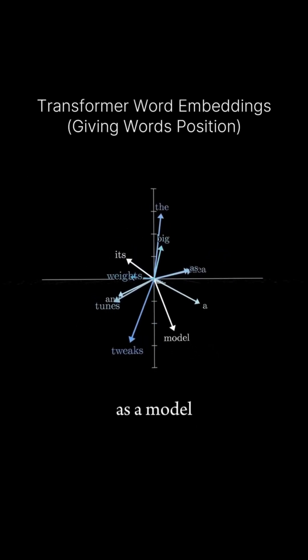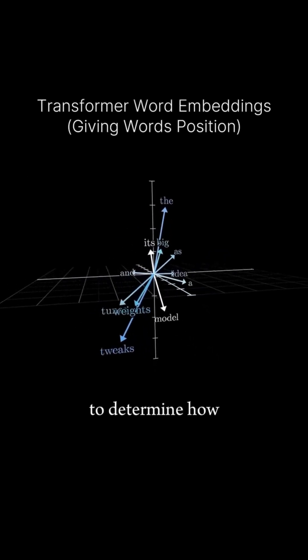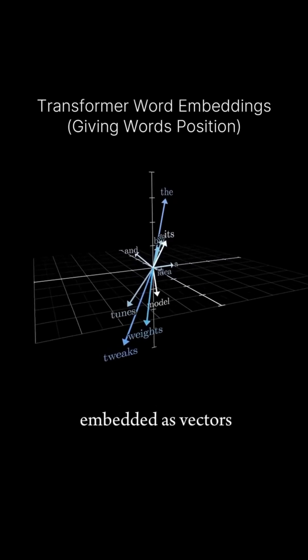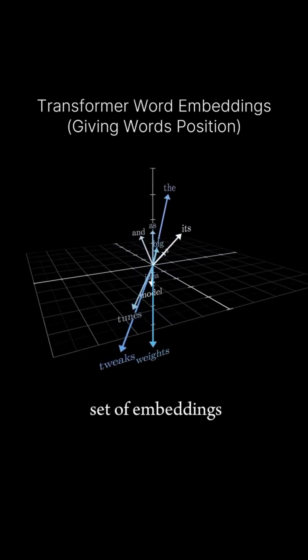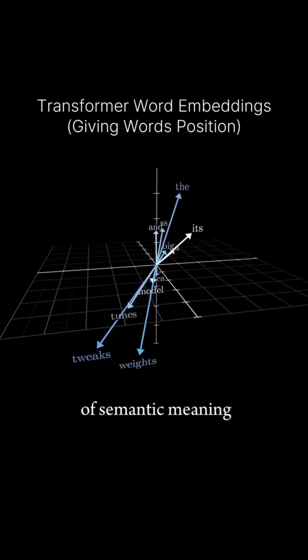The big idea here is that as a model tweaks and tunes its weights to determine how exactly words get embedded as vectors during training, it tends to settle on a set of embeddings where directions in the space have a kind of semantic meaning.